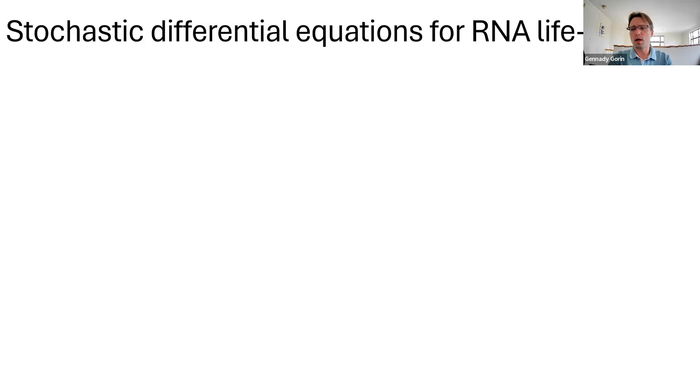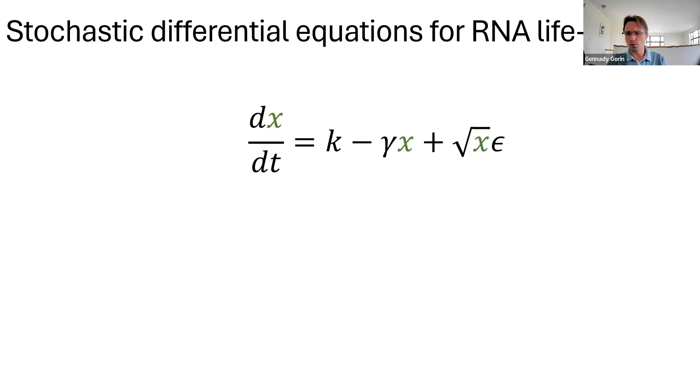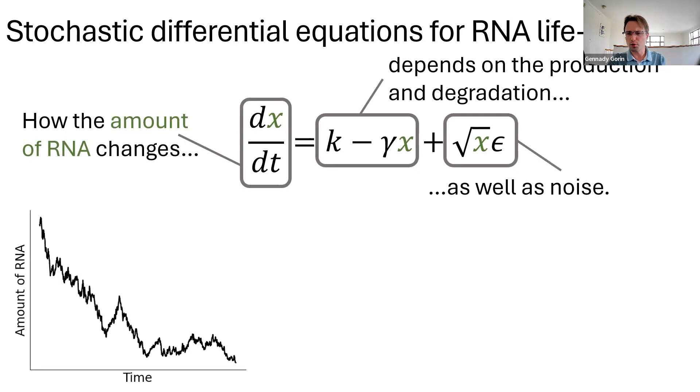So, we can go ahead and correct this stochastic differential equation by using square root dependence for the noise. Same story. The amount of RNA depends on production, degradation, and noise. The trajectories look fine. They cover about the ODE average. And we're no longer going below zero, which is good. So, we seemingly have a solid candidate for P(X).